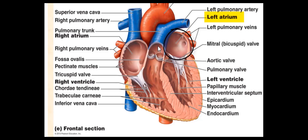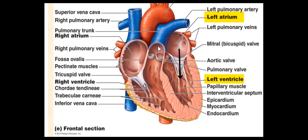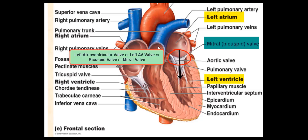The left atrium receives blood from two left pulmonary veins. Blood from the left lung drains into the two pulmonary veins and into the left atrium. In addition, we have two right pulmonary veins. Blood from the right lung drains into the two right pulmonary veins and into the left atrium. Adding these together, we have a total of four pulmonary veins, two on the right and two on the left. These four pulmonary veins are also considered great vessels of the heart. Blood from the left atrium drains into the left ventricle and will pass through the second valve of the heart, called the left atrioventricular valve, or simply the left AV valve, also known as the bicuspid or the mitral valve.